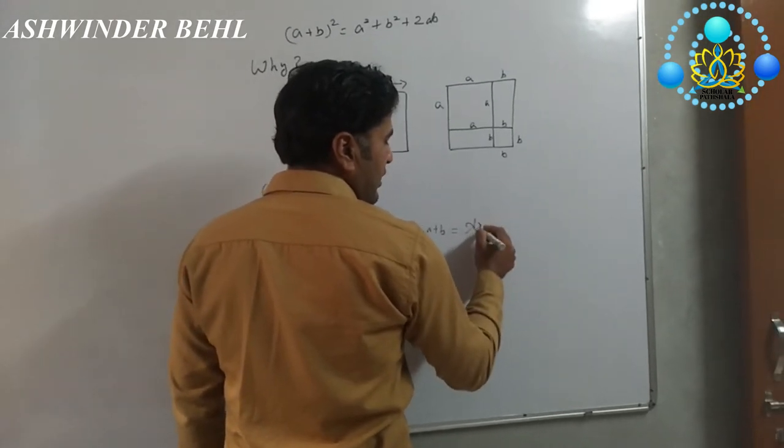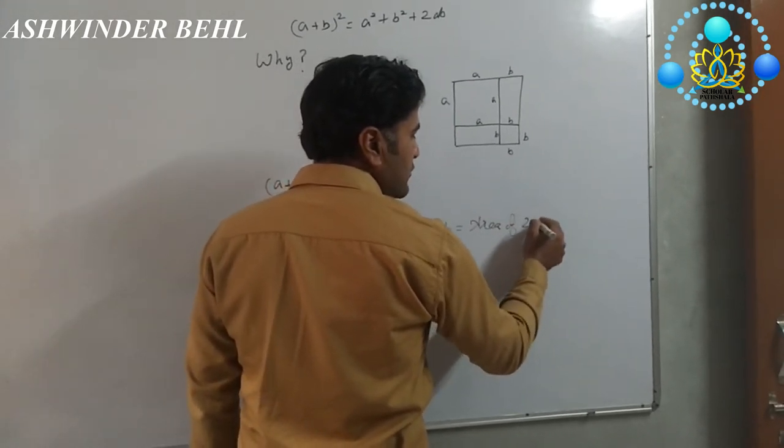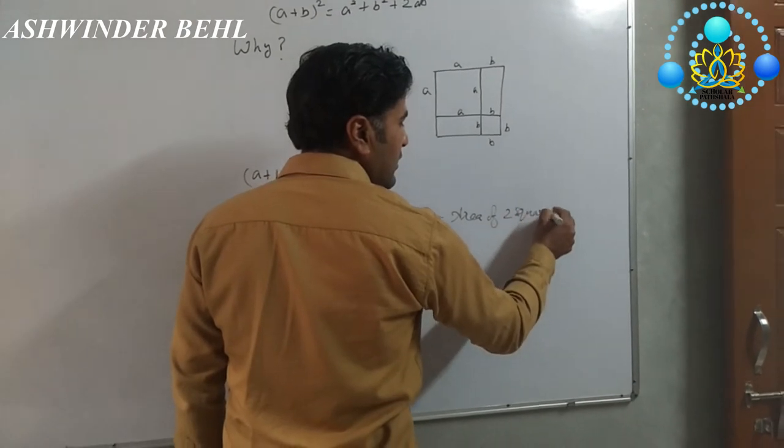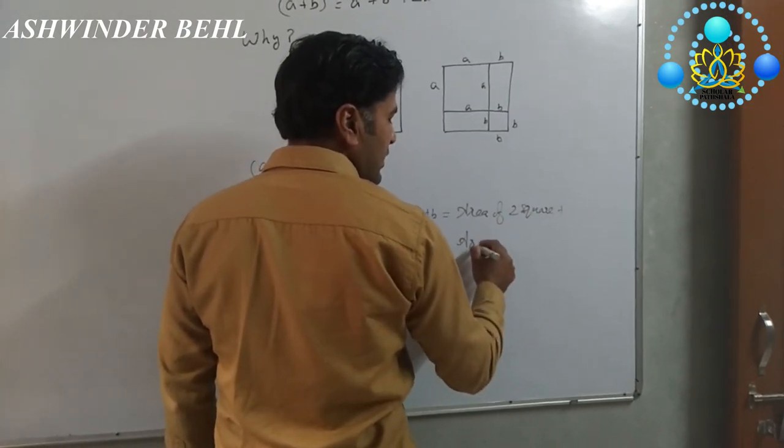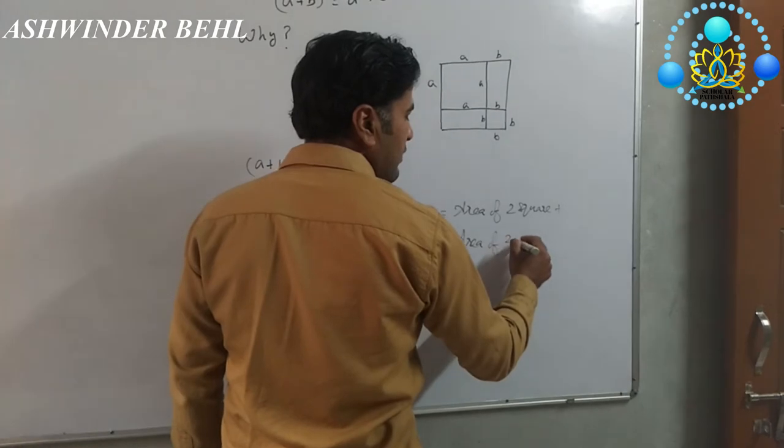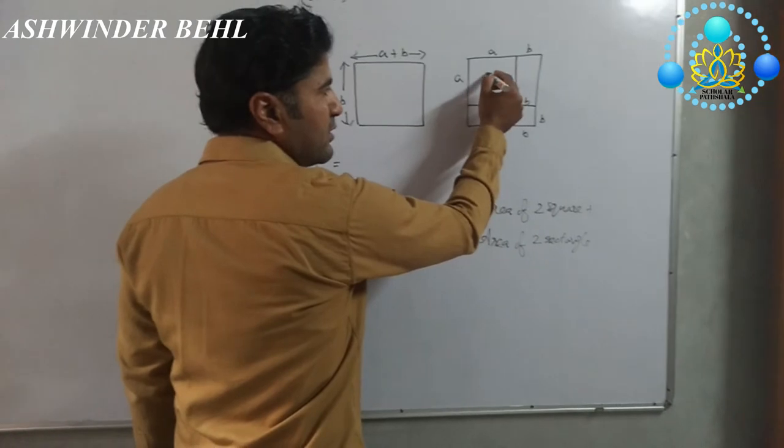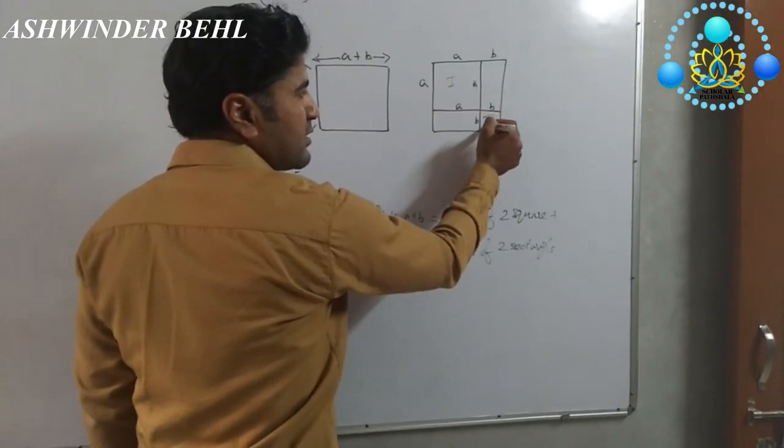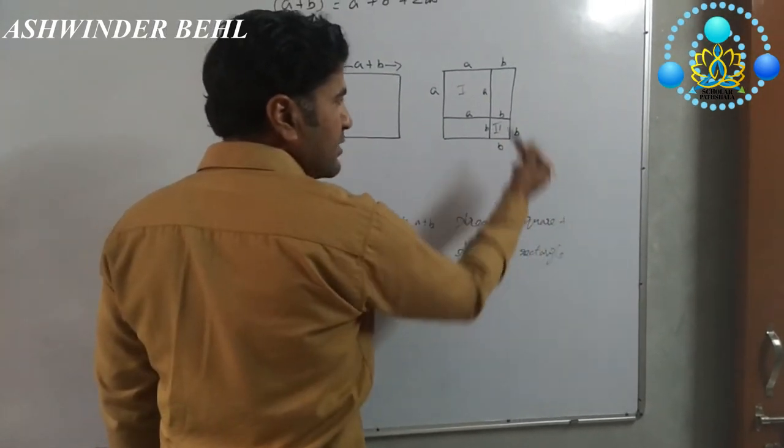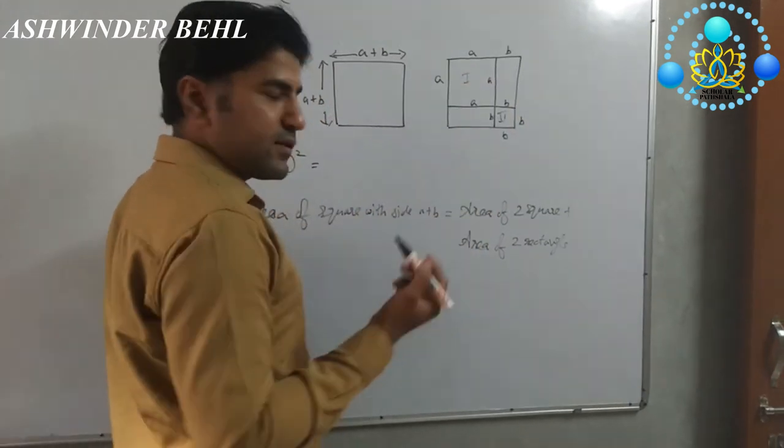So we can write down here area of 2 squares plus area of 2 rectangles. Two squares means that one, that is the first one, and that is the second one square. A rectangle, same as that is first and that is second.